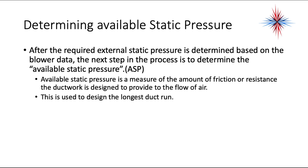After the required external static pressure is determined from the blower data, the next step is to determine the available static pressure. Available static pressure is a measure of the friction or resistance in the ductwork designed to provide airflow, and it is used to design the longest duct run. Everything we do is based on the longest duct run from the air handler — which may not be the longest physical distance, because you must look at the actual length of ductwork including the number of fittings.